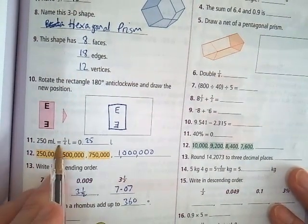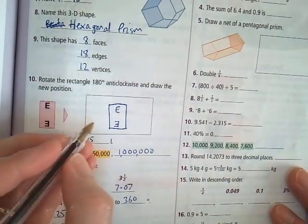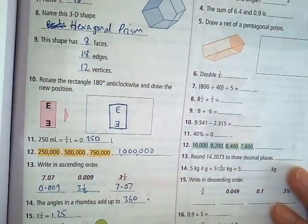Question number 11. 250 milliliters equals one quarter of a liter, 0.25 liters. You can also write 0.250, that's fine.